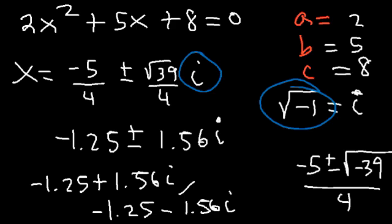Remember: if the discriminant is positive — greater than 0 — you're going to get two real solutions. If d equals 0, then there's going to be one real solution. If the discriminant is negative — less than 0 — you're going to have two imaginary solutions.